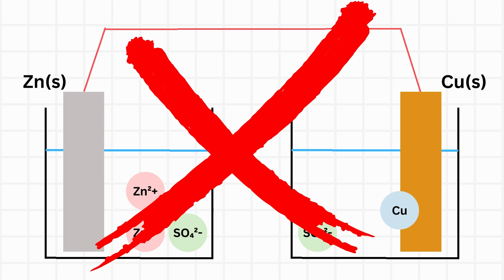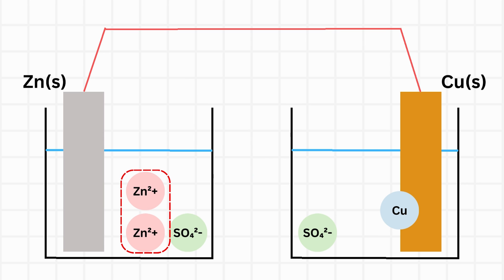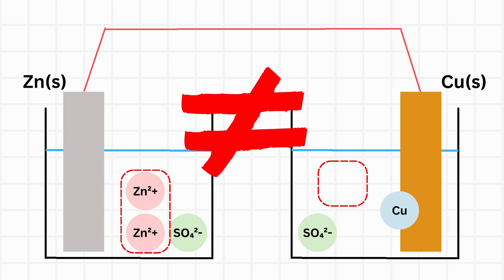However, this doesn't happen. Every time the reaction happens, there becomes more positive charge in the left beaker, and less positive charge in the right, causing an imbalance.